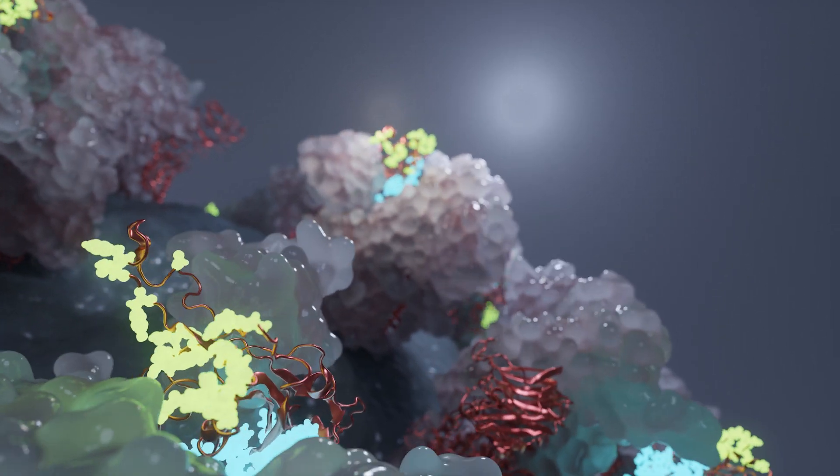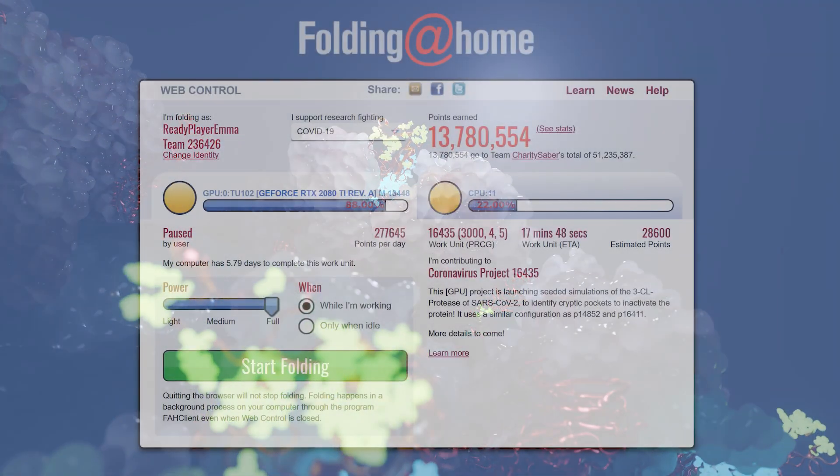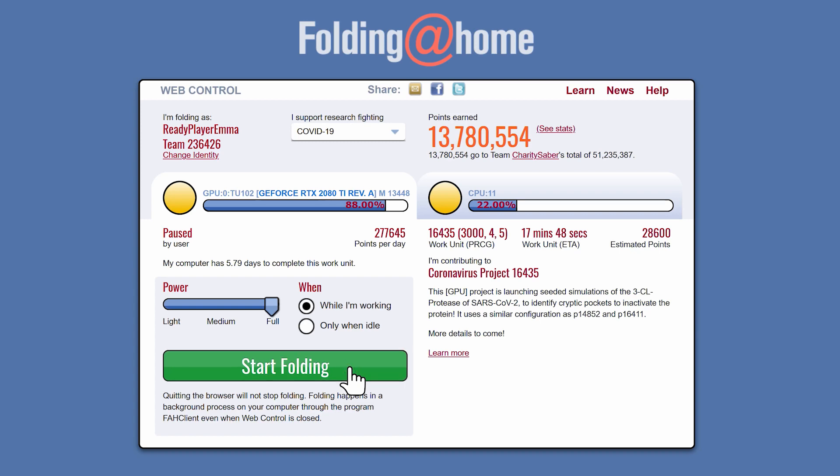To perform the numerical simulations necessary to understand these processes, researchers turned to Folding at Home, which aggregates spare computing cycles of volunteers' home computers, including 200,000 NVIDIA GPUs, to create a supercomputer of more than one exaflop.